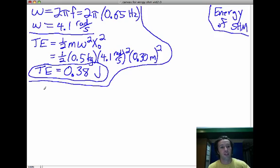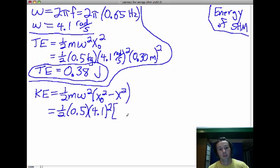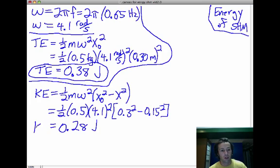Next part of the problem is asking, what's the kinetic energy? Kinetic energy is another kind of weird-looking equation of 1/2 m omega squared. And then it gets more complex. You've got the amplitude squared minus the displacement squared. So it's really not too much harder. You just plug in what you know. 1/2 times 0.5. Now I'm going to take out the units on this to save me some writing and you some listening. 4.1 squared. Your amplitude is 0.3 meters squared. Your displacement is 0.15 squared. You then plug all that stuff in your calculator and you'll end up with a kinetic energy of 0.28 joules as your kinetic energy.